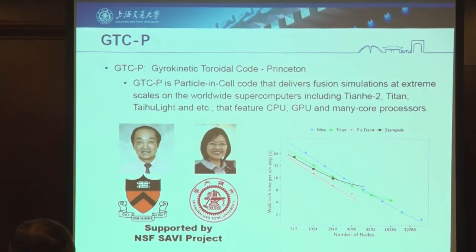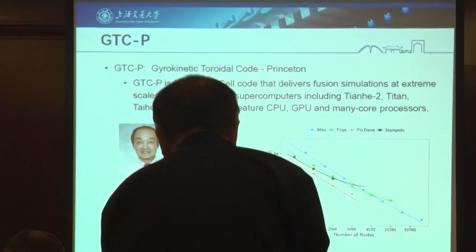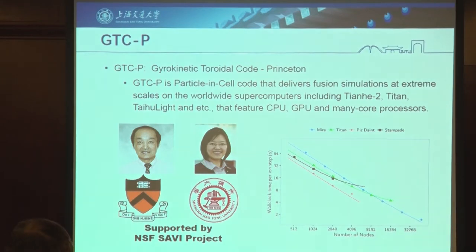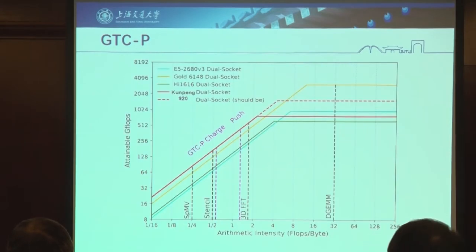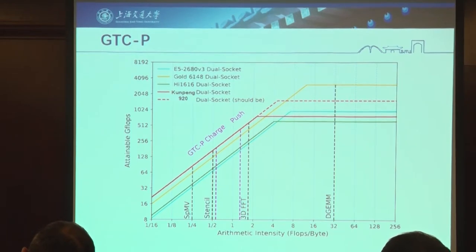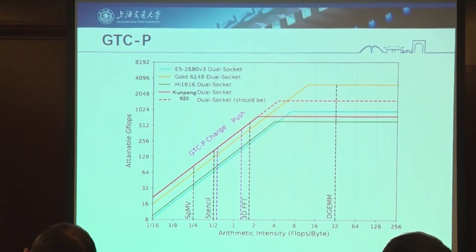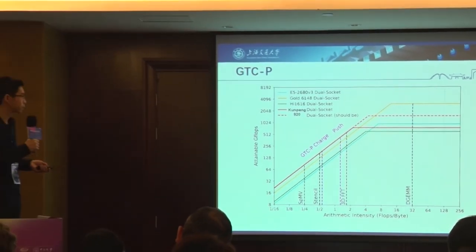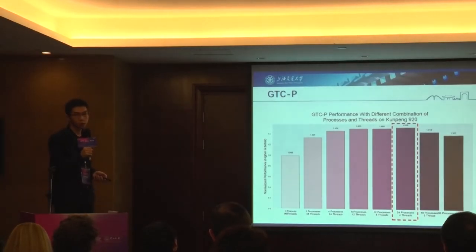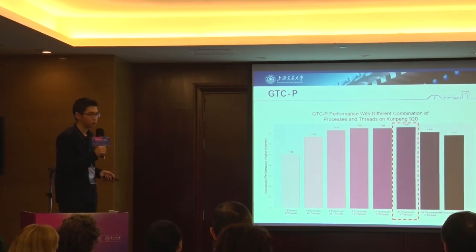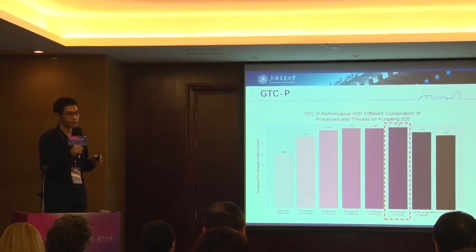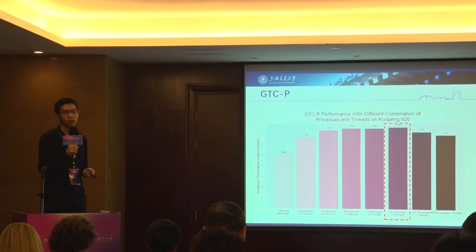We also use a real-world application to test this chip: GTC-P, which we collaborated with Princeton on for years, and which we ported to Tianhe and Sunway. It's a gyrokinetic theoretical code developed by W.W. Lee. The roofline model shows GTC-P is a relatively memory-bound application. The main kernels are charge and push — charge is a scatter operation and push is a gather operation. If you remember the data hierarchy I mentioned earlier, running the application efficiently requires separating data into three levels: core group, ring, and chip.